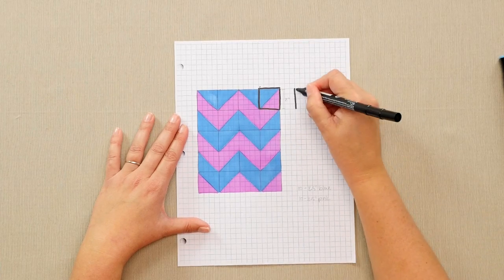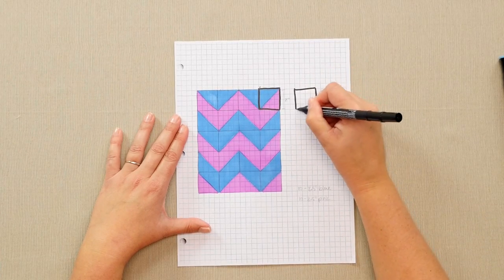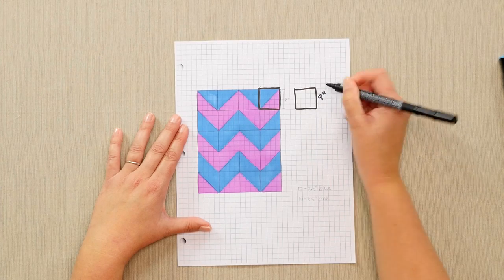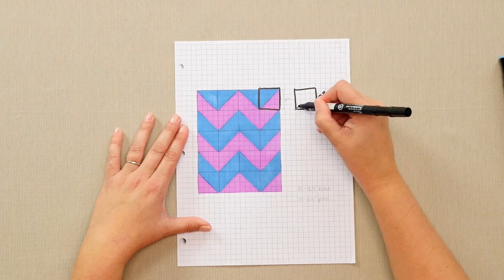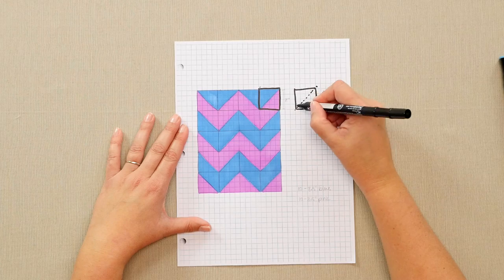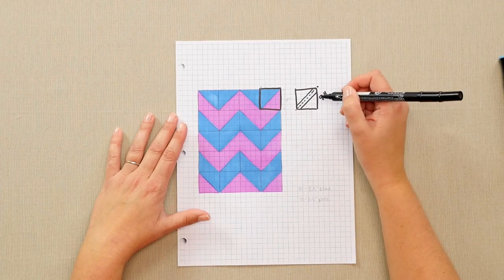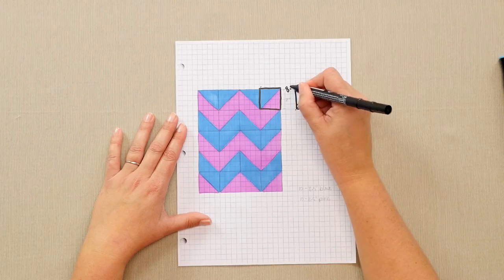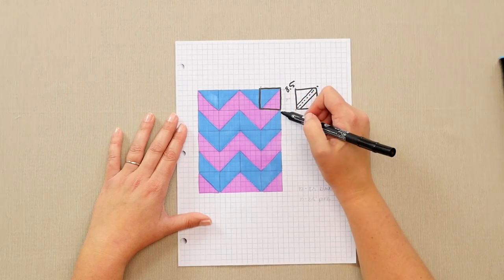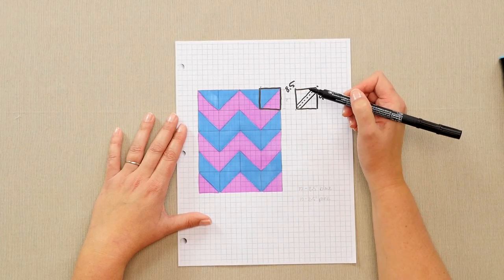To make this block, I'll actually cut two nine inch squares of each fabric, draw a line across it, stitch a quarter inch from each side, and it'll trim perfectly to the eight and a half inches that I need for it to be a finished eight inch block in my quilt.